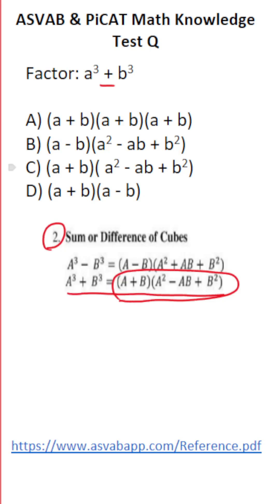So this is going to be our answer: A plus B times A squared minus AB plus B squared. So this one is C.